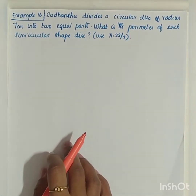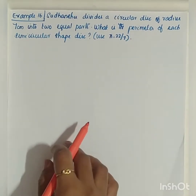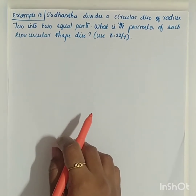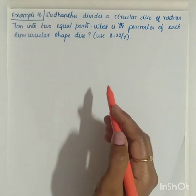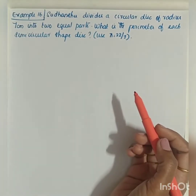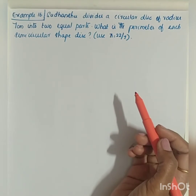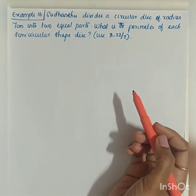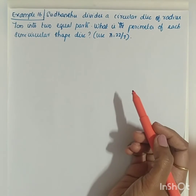The next question is example 16. Sudhanshu divides a circular disk of radius 7 cm into two equal parts. What is the perimeter of each semicircular shaped disk?